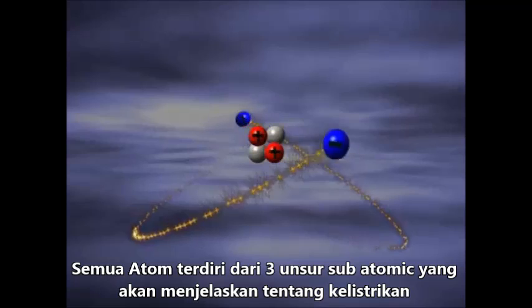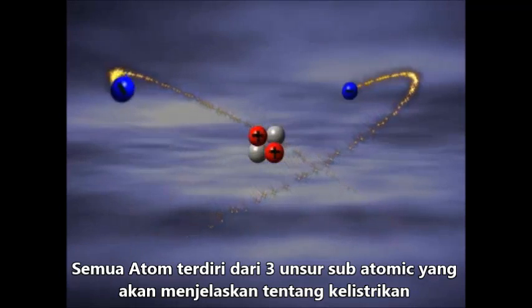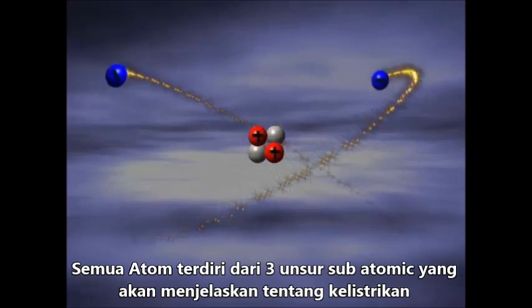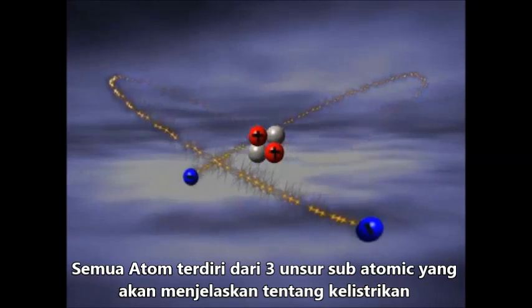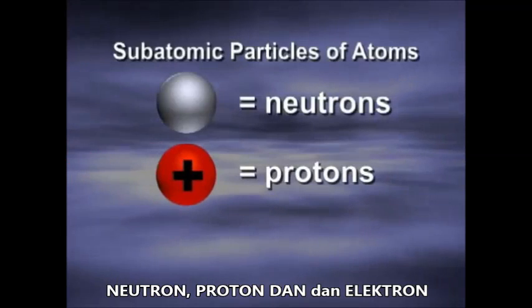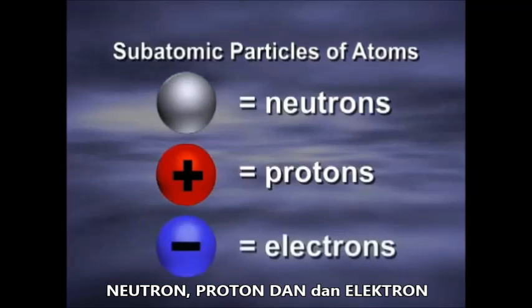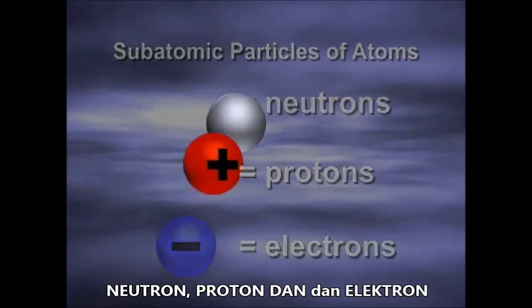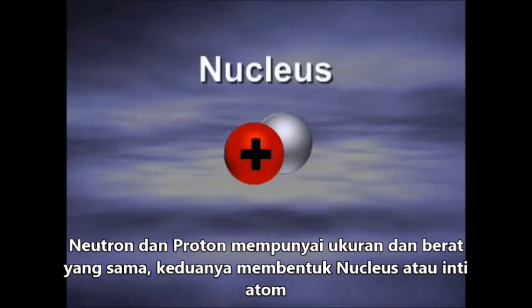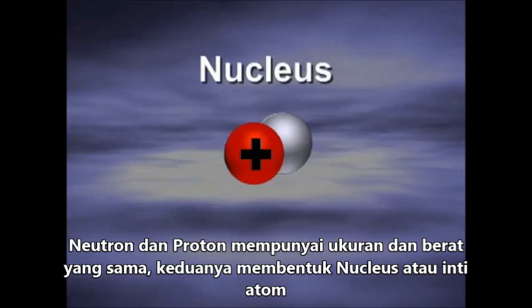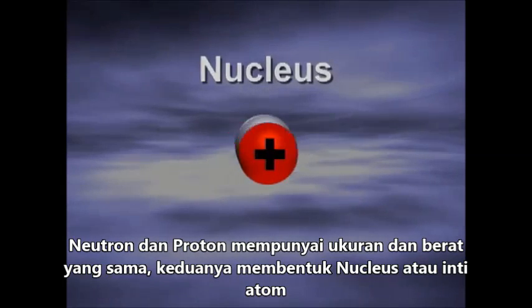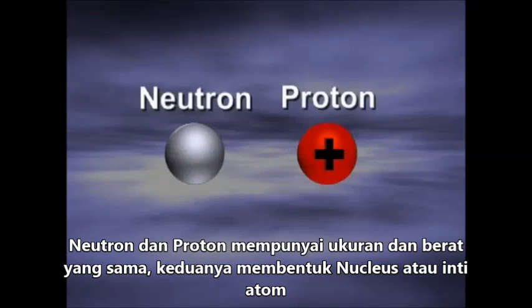All atoms contain three types of subatomic particles that are of interest to you in electricity: neutrons, protons, and electrons. The neutrons and protons in an atom are about the same size and weight, and they form the nucleus.